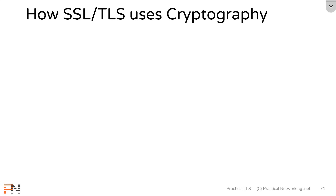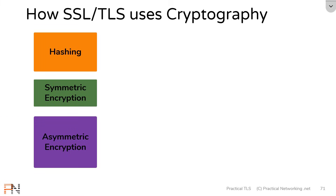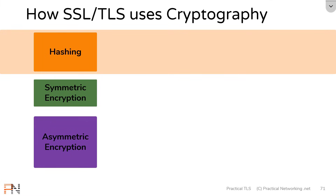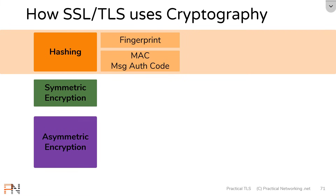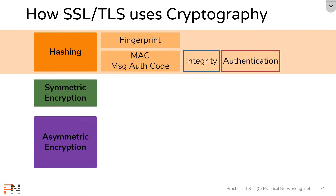We discussed three different cryptographic tools. First, hashing — where you can use hashing to create a fingerprint of a message. We also discussed message authentication codes, or MACs, which is the idea of combining a message with a secret key when calculating that digest. MACs provide integrity for data, and they also provide authentication because the other side must have the same key that you do.